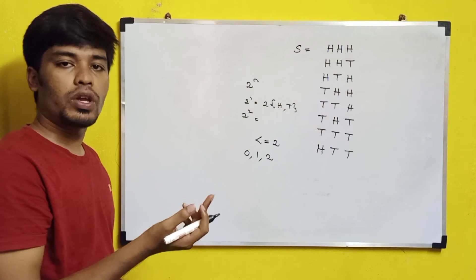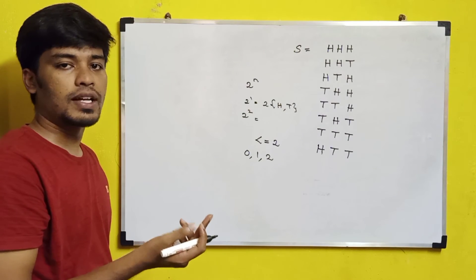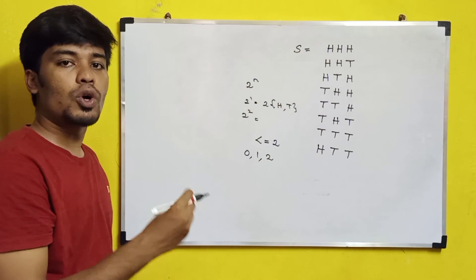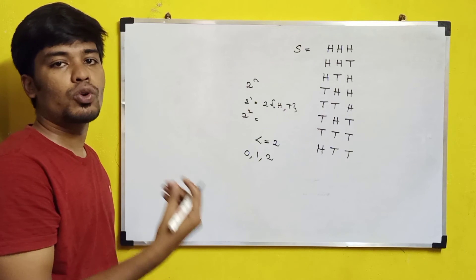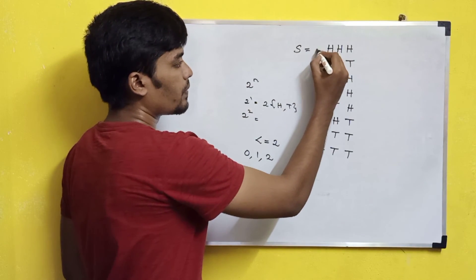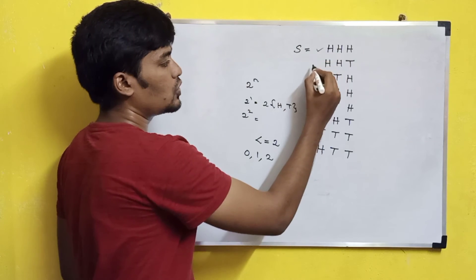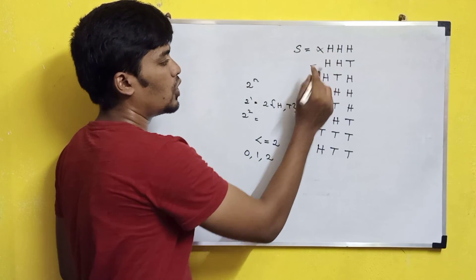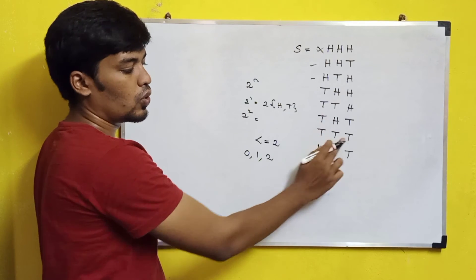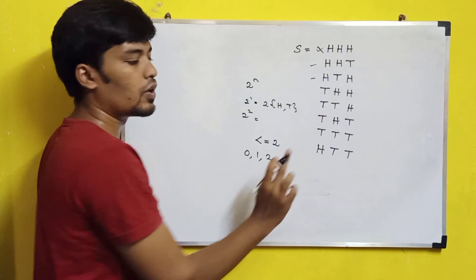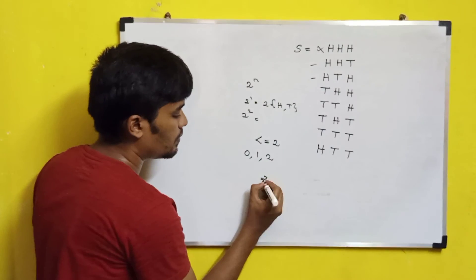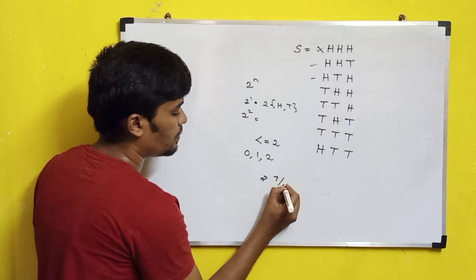At least means greater than or equal to 2, whereas at most means 0, 1, or 2 heads. Listing the outcomes: there are three cases with 2 heads, three cases with 1 head, and one case with no heads — totaling 7 favorable outcomes. So the probability of getting at most 2 heads is 7 by 8.